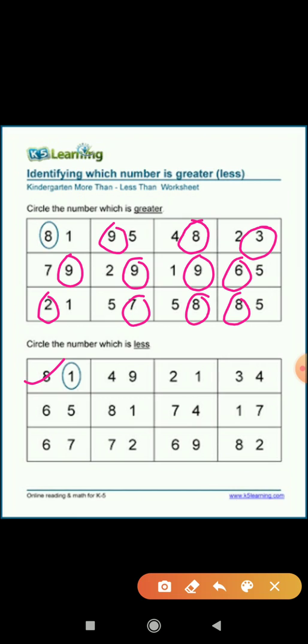Okay, just example. Eight and one. One is less than eight. So let's start. Second, four and nine. Four is less than nine. Okay, next. Two or one. One is less than two. Next, three and four. Three is less than four.